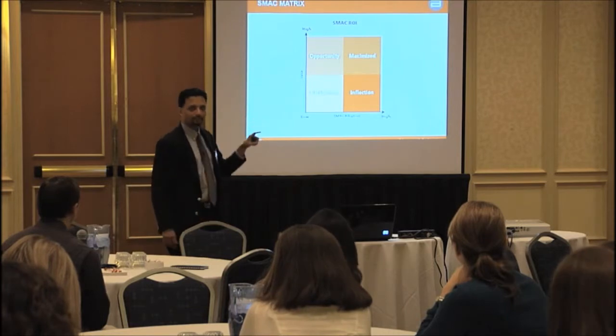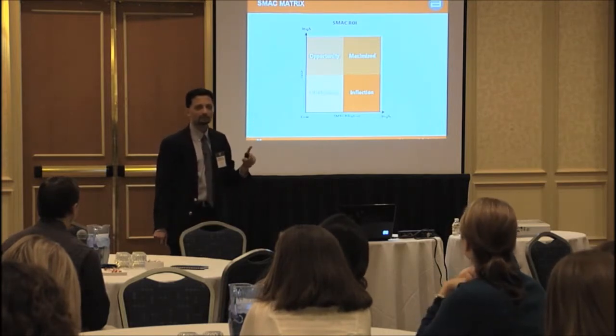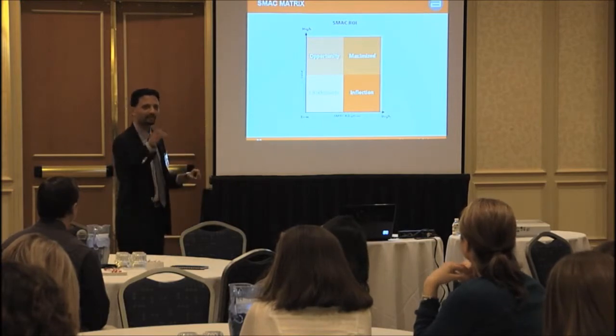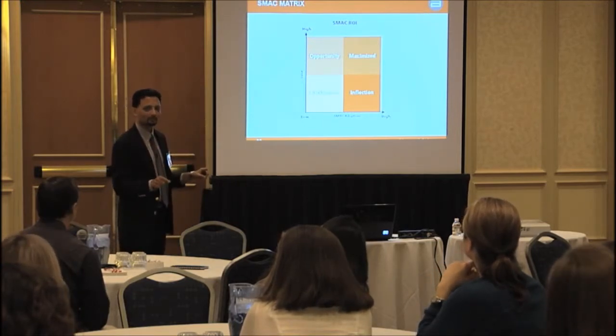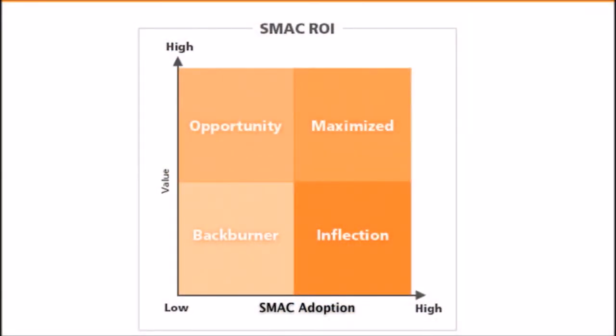Now go back eight years ago when Netflix was sending DVDs by mail — they hadn't yet adopted the SMACK stack, so there was a lot of opportunity but low adoption. And Blockbuster hadn't adopted it at all and wasn't generating much value. Then someone came in, adopted the SMACK stack, generated a lot of value, broke down the old business models, and reached the maximized quadrant.